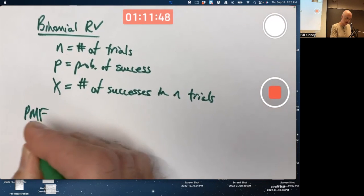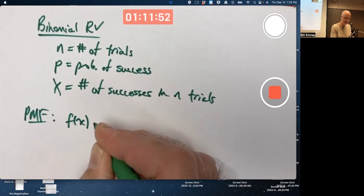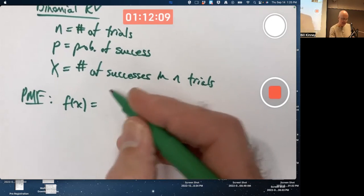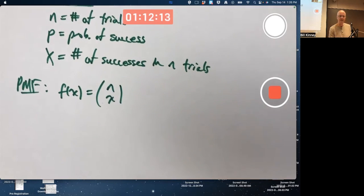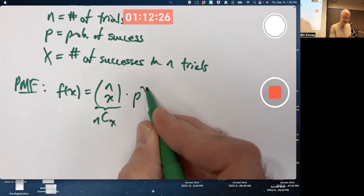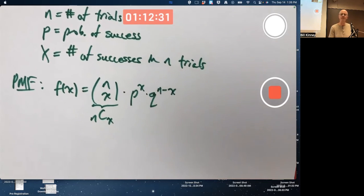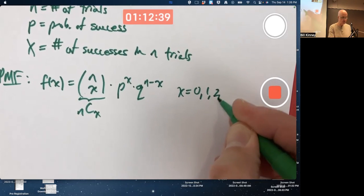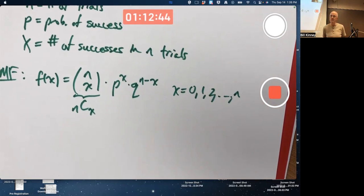The PMF, little f of little x, turns out, by thinking about combinations from chapter one, to equal n choose x - yes, this is n choose x, the number of combinations of x objects taken from a group of n objects - times P to the x times Q to the n minus x. And you use this formula for x equals zero, one, two, through n. Yes, including zero - and we don't start at one - because you could have zero successes. You could have zero hits in three at bats.